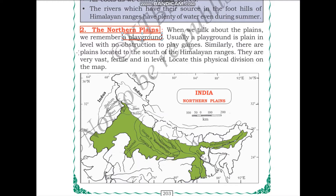Similarly, there are plains located to the south of the Himalayan ranges. As we can see, the plains are located to the south of the Himalayan ranges. The Himalayas are here and the plains, shown in green color, are located to the south of the Himalayas. They are very vast, fertile, and level - vast in area, very fertile for agriculture, and flat.